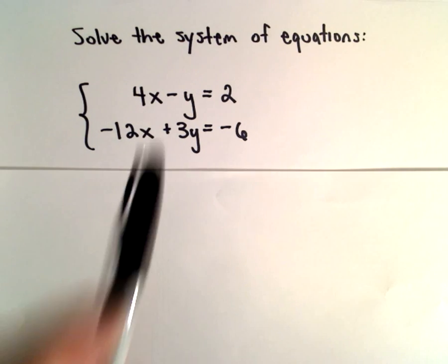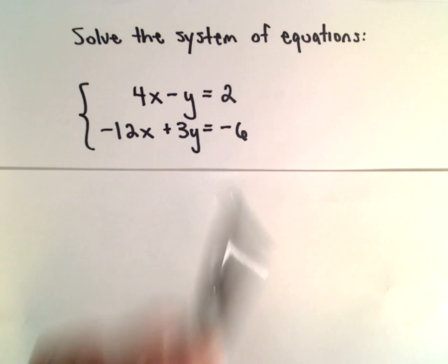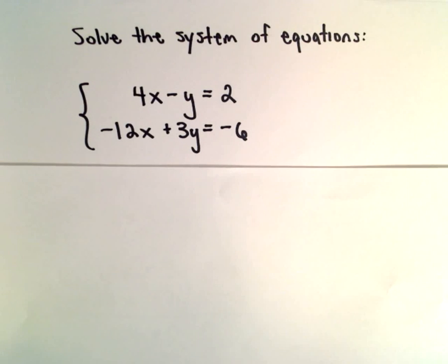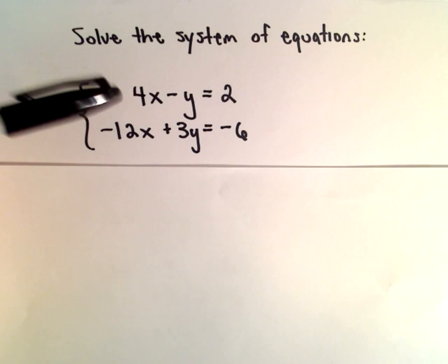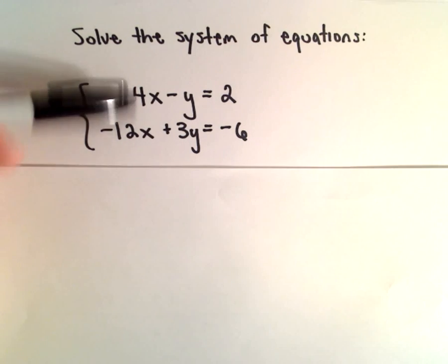Here we're going to solve the system of equations 4x minus y equals 2 and negative 12x plus 3y equals negative 6. So I'm going to use elimination by addition and the thing that I'm going to try to do is to eliminate the terms containing x.